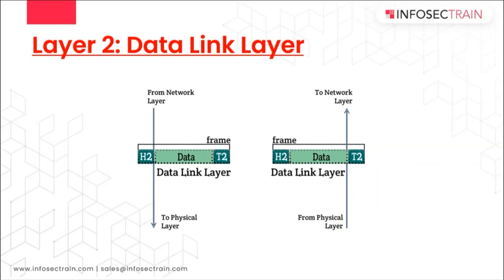The Data Link Layer uses protocols like Point-to-Point Protocol (PPP) and Serial Line Internet Protocol (SLIP), sending blocks of data with the necessary synchronizations, bit error detection, correction controls, and flow controls. Approximately 70 percent of error handling is done at this layer. Unlike the Physical Layer, which accepts and transmits a stream of bits without regard to meaning or structure, it is up to the Data Link Layer to create and recognize frame boundaries by attaching special bit patterns to the beginning and end of each frame.